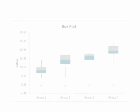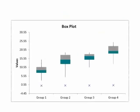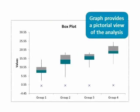Finally, QI Macros will create a chart for you to help you understand the results. In this example, we rejected the null hypothesis because the means were different. The box plot clearly shows that the means of the four data sets are different.